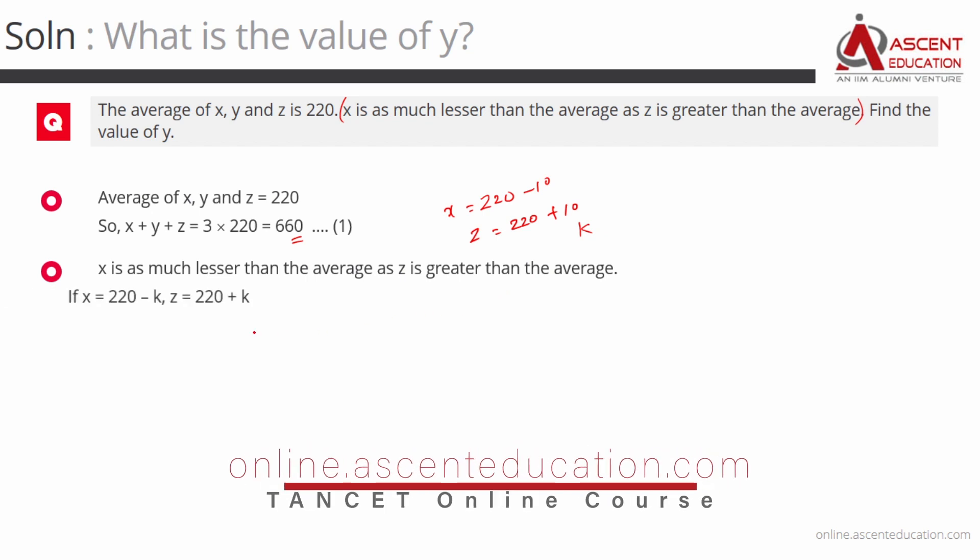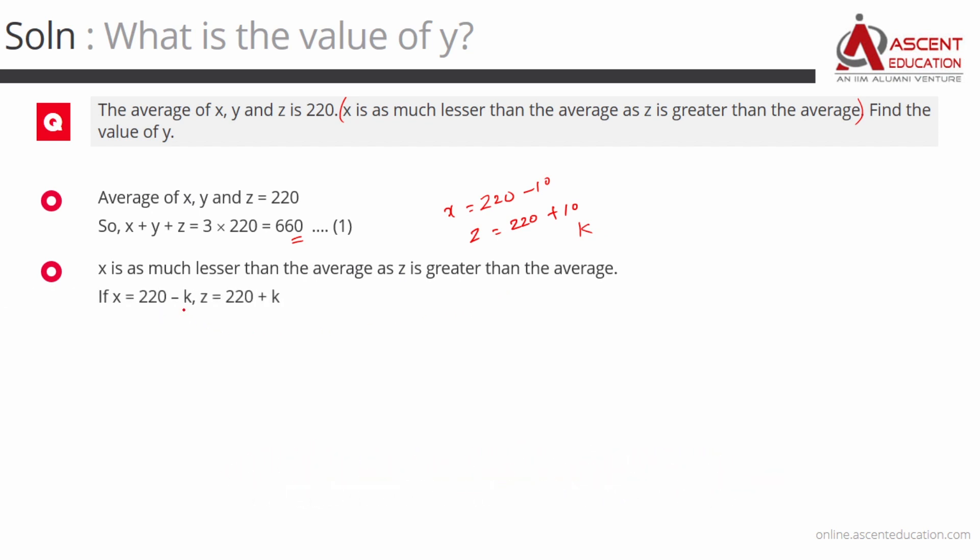So if x is equal to 220 minus k, so x is k lesser than 220. Now, z is k more than 220. So x would have value 220 minus k and z would have value 220 plus k.